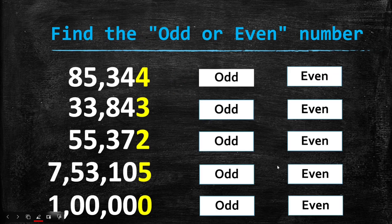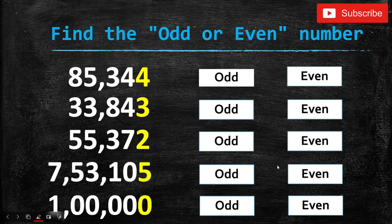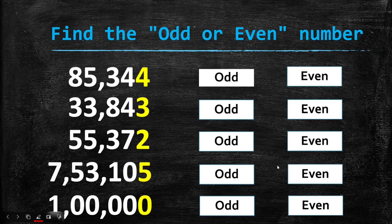Now on to the questions. Find whether the number is odd or even. First: 85,344. Second: 33,843. Third: 55,372. Fourth: 7,53,105. And the last one: 1 lakh. The only thing you have to do is check the ones place. You can pause the video and try these questions.